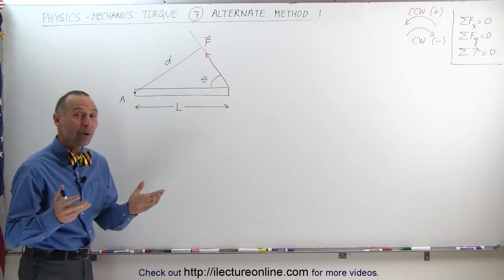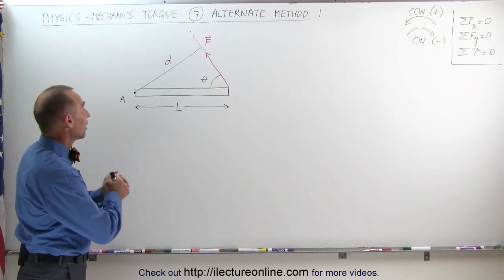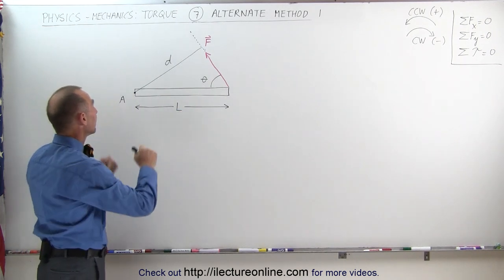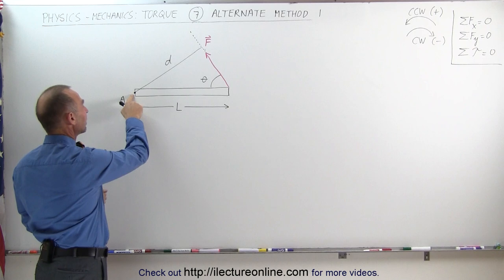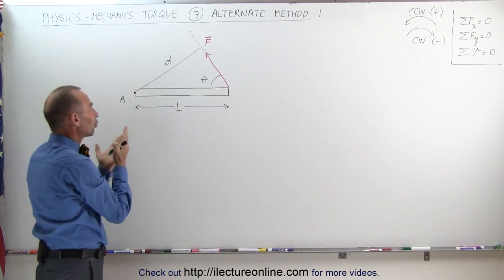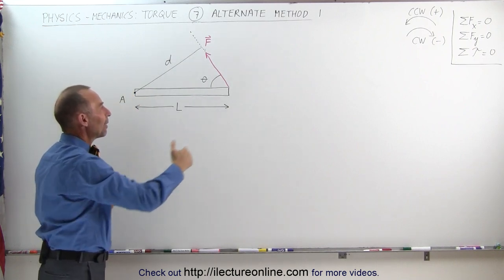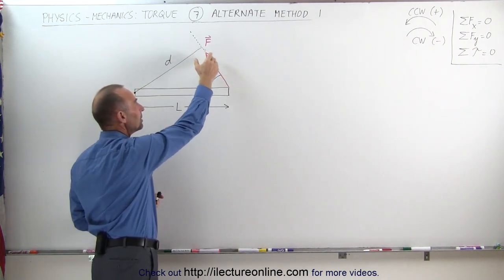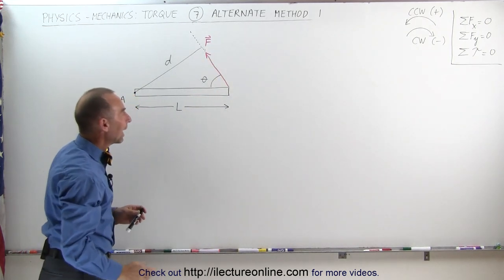Here is the way we've been doing it in the past. Let's say we have a beam. The beam is attached to a point right here, and we need to find the torque about point A. We have a force acting on the other end of the beam with magnitude F.